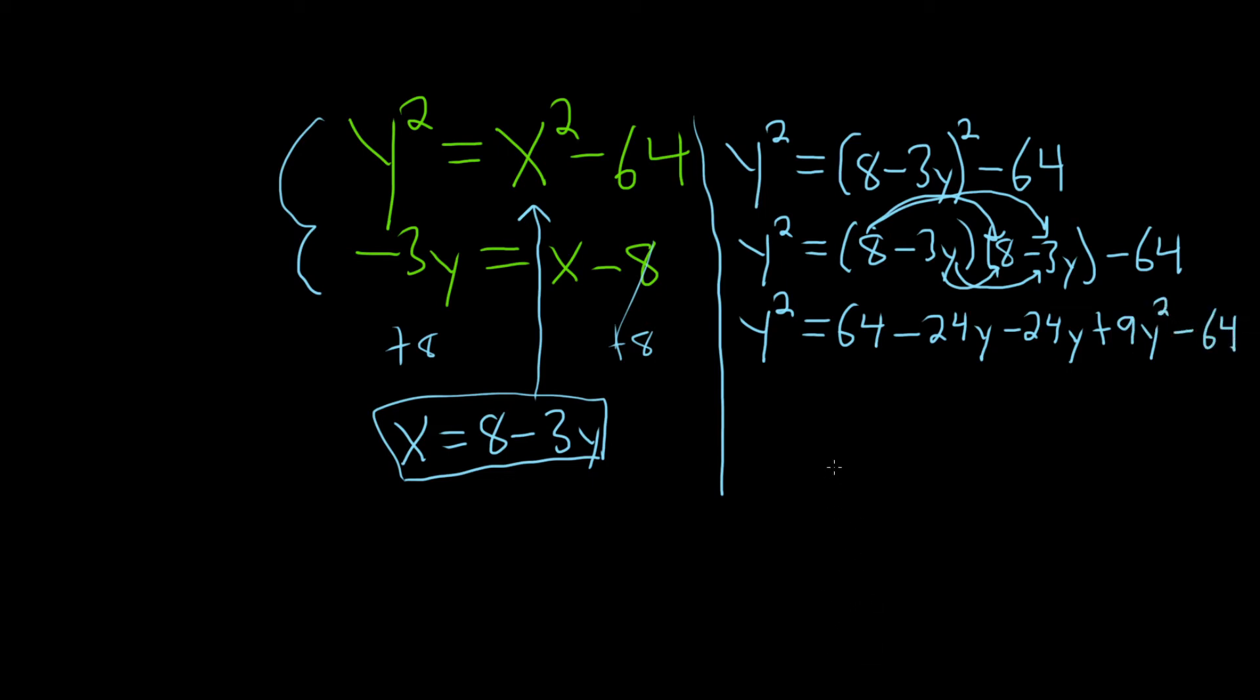Let's just check that. So 8 times 8 is 64. And then 8 times negative 3y is negative 24y. Check. The middle ones give you negative 24y. And then negative 3y times negative 3y. That's going to be a positive 9y squared. And we still have the minus 64.